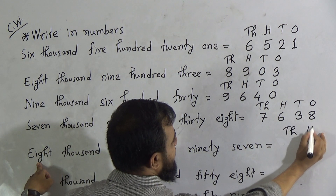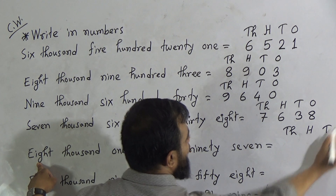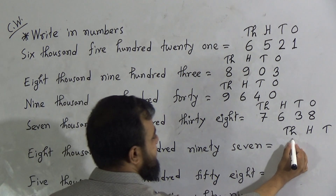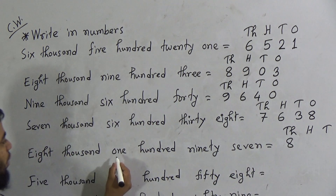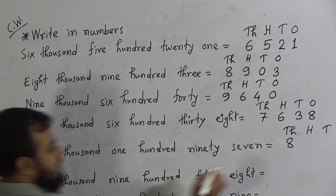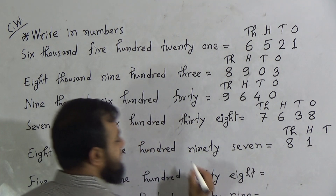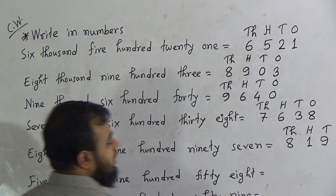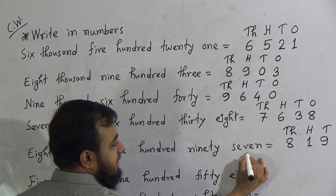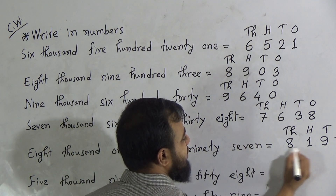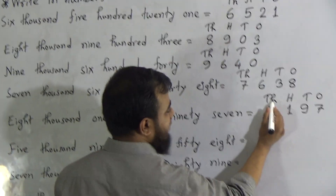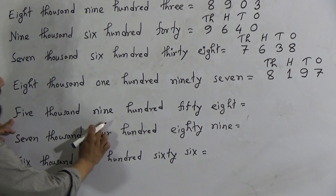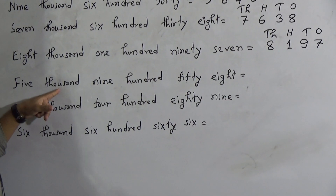The next number is 8197. Place value table: Thousands, Hundreds, Tens, Ones. Eight thousand means we write 8 in the thousands place. One hundred means we write 1 in the hundreds place. For 97, we write 9 in the tens place (for 90) and 7 in the ones place. So 8197 is written as 8 | 1 | 9 | 7.